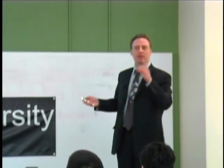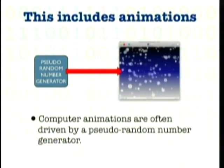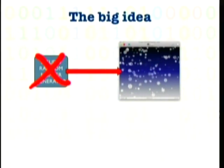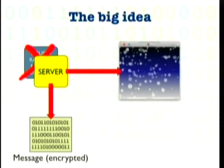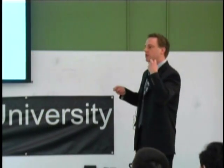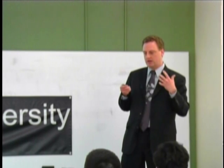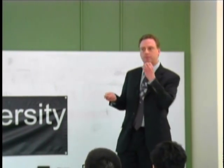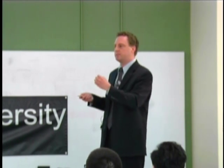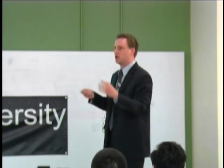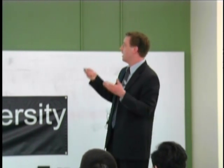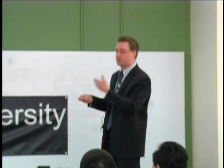This got us thinking: what if we took an animation driven by a pseudo-random number generator, reached into the computer, ripped that program out, and replaced it with something that pretends to be a pseudo-random number generator? But instead of handing over random numbers, it hands over pieces of a message. When you encrypt a message, it looks random — in fact, if you do it properly, it becomes computationally impossible to distinguish between true randomness and an encrypted message.